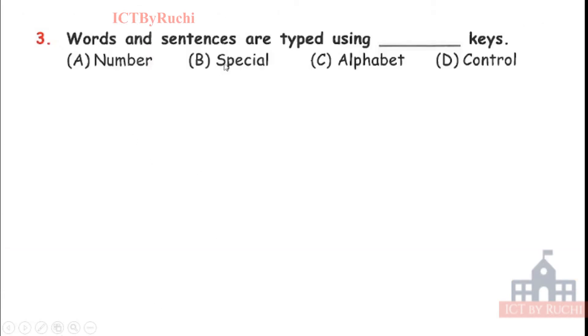Third. Words and sentences are typing using dash key: number, special, alphabet or control. It is very easy for writing words and sentences. We need alphabet. So the answer may be alphabet. Tell me the answer. Very easy. C, alphabet keys.